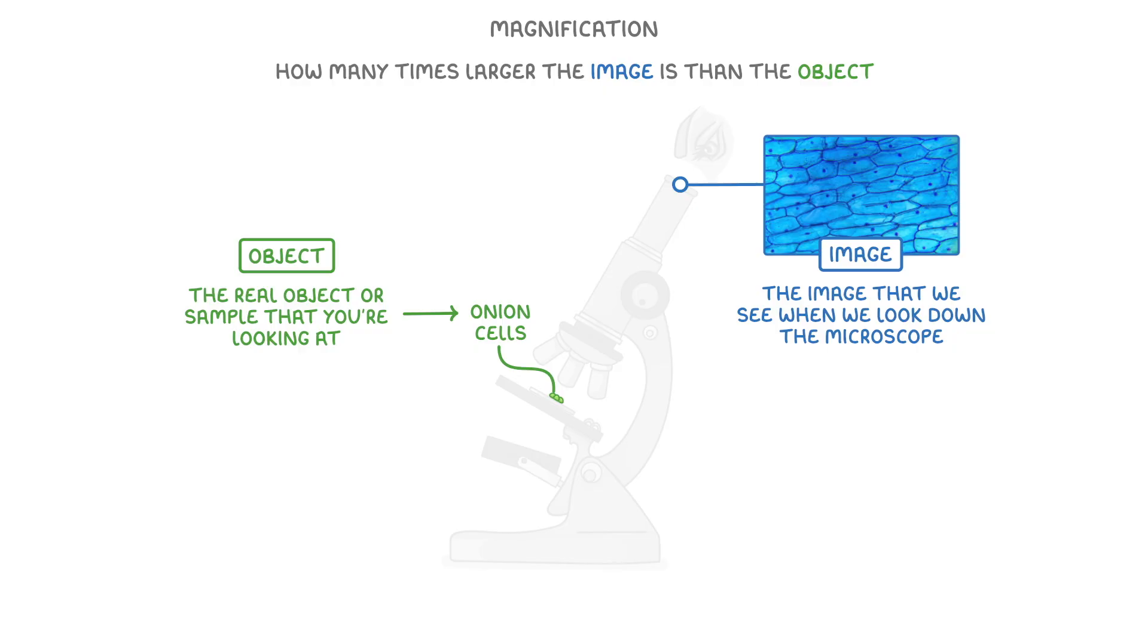So if the image appeared 1000 times larger than the object, then the magnification would be times 1000.